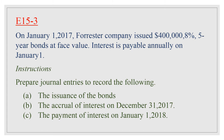Exercise 15-3: On January 1, 2017, F Company issued $400,000, 8% five-year bonds at face value. Interest is payable annually on January 1. Instructions: prepare journal entries to record (a) the issuance of the bonds, (b) the accrual of interest on December 31, 2017, and (c) the payment of interest on January 1, 2018.